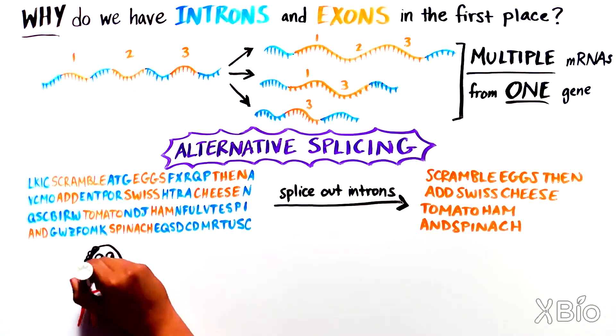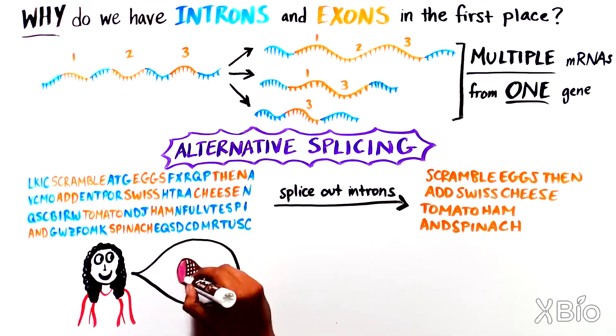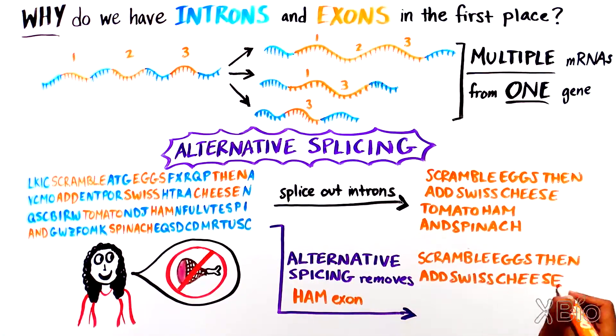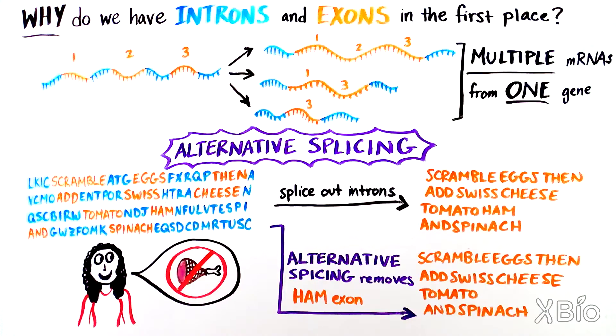Let's say another friend joins you, but she's a vegetarian. Alternative splicing would remove the exon corresponding to ham, so she could have an omelette with Swiss cheese, tomato, and spinach.